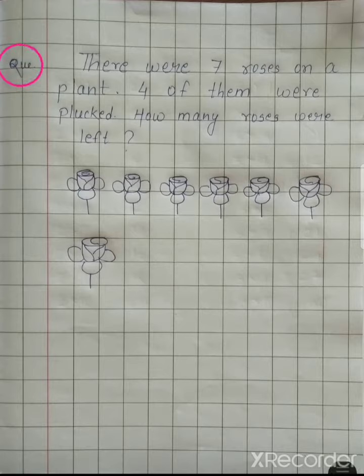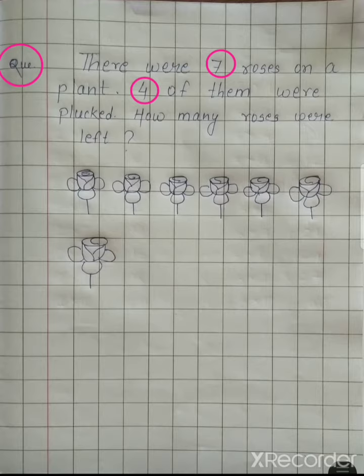The question is saying: there were seven roses on a plant, and four of them were plucked. How many roses were left?